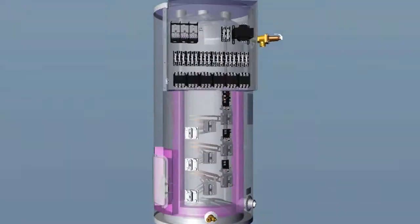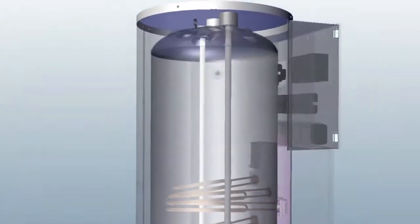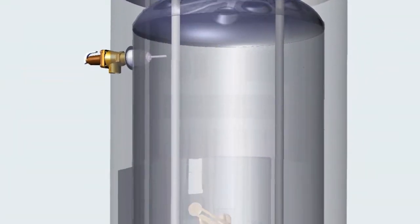HTP commercial electric heaters are equipped with two anode rods to protect the tank. Refer to hand hole clean out section for inspection of anode rods.